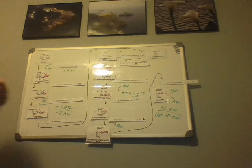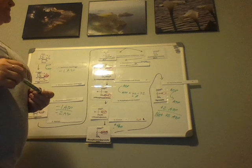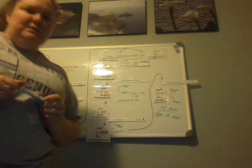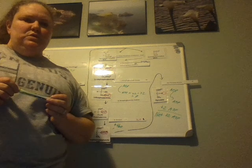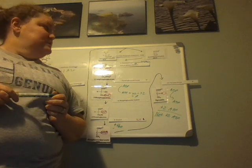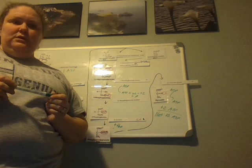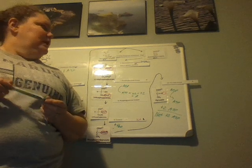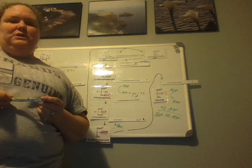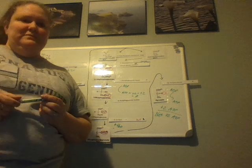So that is glycolysis. From here, pyruvate will go on to make more ATP molecules through the Krebs cycle, or citric acid cycle, and also the electron transport chain. Hopefully this is helpful. Thank you.